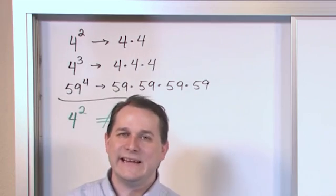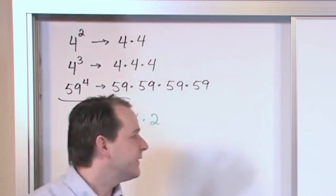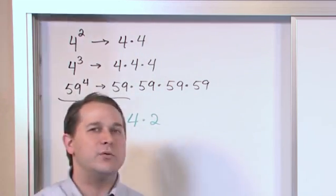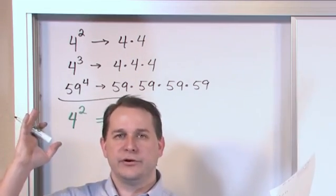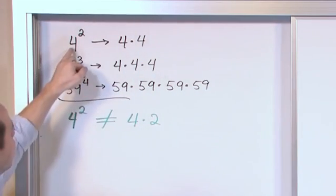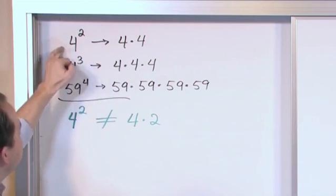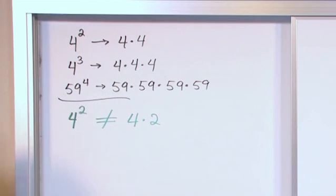Because we already said that 4 squared is equal to 4 times 4. 4 times 4 is 16. 4 times 2 is 8. So you can see that these two things are not equal. So you definitely don't just multiply by the exponent and you're done. What you're doing is you're multiplying the bottom number by itself as many times as indicated by the number up there.